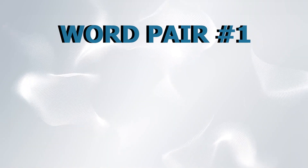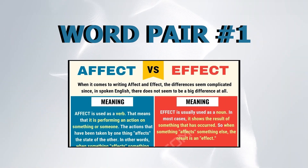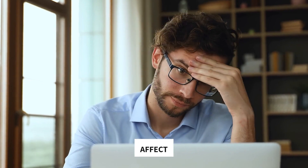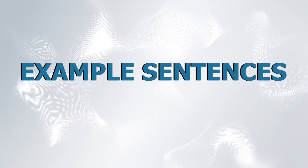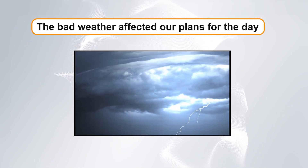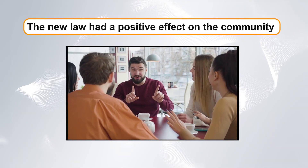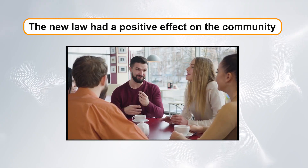Word pair number one: affect versus effect. Our first confusing word pair is affect and effect. Affect is usually a verb, which means to have an influence on something, while effect is typically a noun referring to the result or outcome of an action. Example sentences: One, the bad weather affected our plans for the day. Two, the new law had a positive effect on the community.